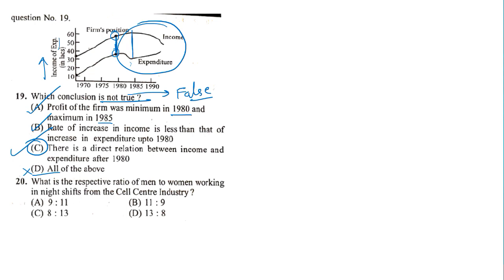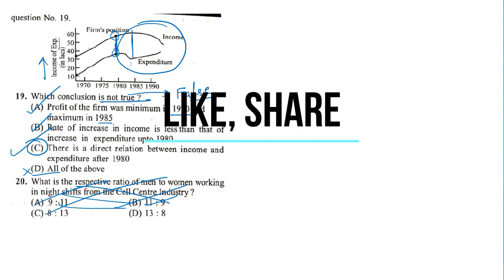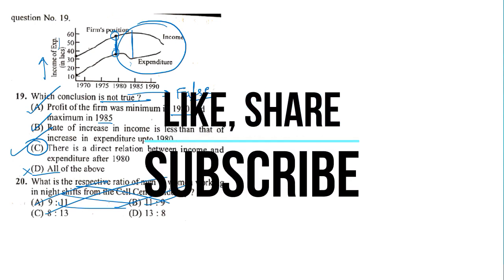We can confirm: from 1970 to 1980 the firm's income and expenditure move together, but after 1980 there is no proper relationship. Data interpretation problems are not that complicated — all you need to do is understand the graph. The image details in the middle are less important; what matters most is identifying what is on the x-axis and what is on the y-axis.